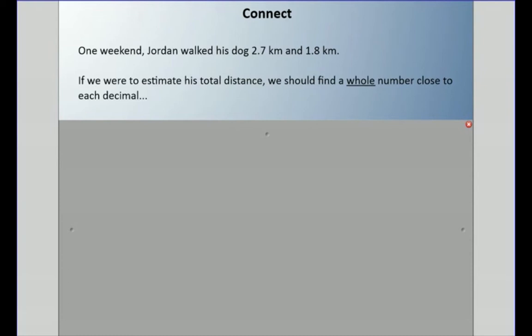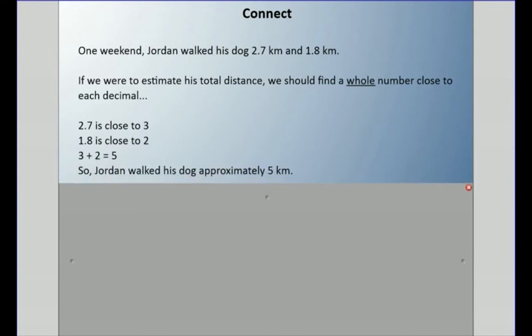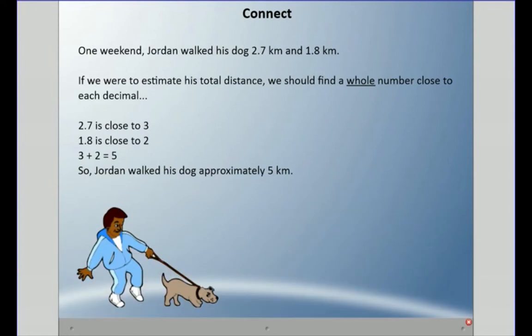Our story problem today: One weekend, Jordan walked his dog 2.7 kilometers and 1.8 kilometers. Maybe Saturday he walked one and Sunday the other. If we were to estimate his total distance, we should find a whole number close to each decimal. 2.7 is close to three, and 1.8 is closest to two. So three plus two is five—he walked approximately five kilometers.